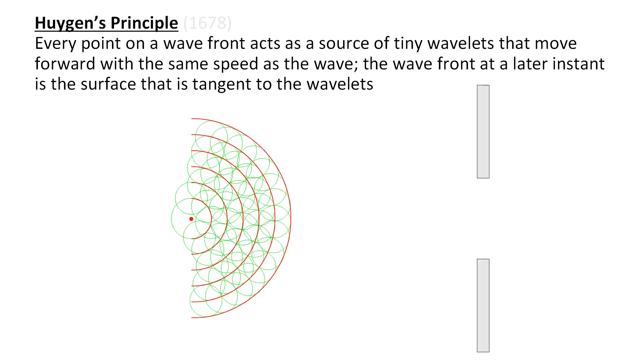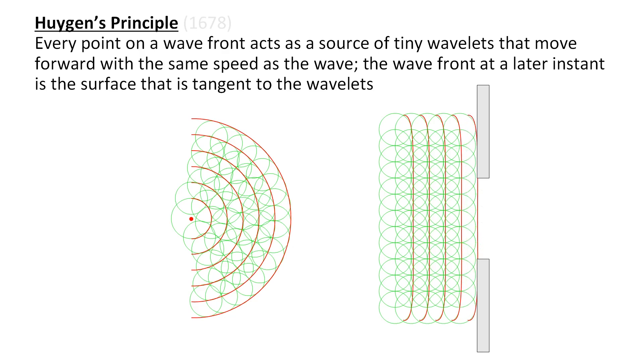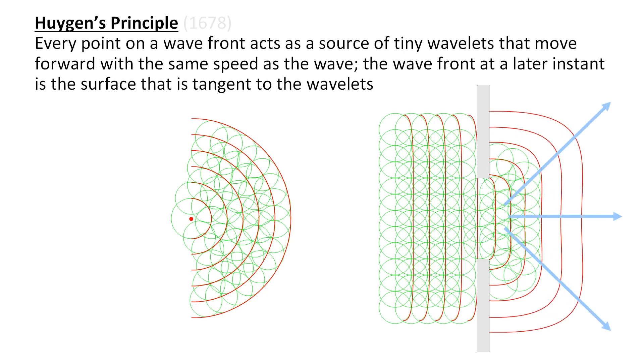If you treat light like a wavefront, you'll see that the path that the light takes is perpendicular to the wave. And if the wavefront has to pass through a tiny opening, that wavefront has to bulge through the opening and curve around the corner. This phenomenon is known as diffraction, a common problem in photography.